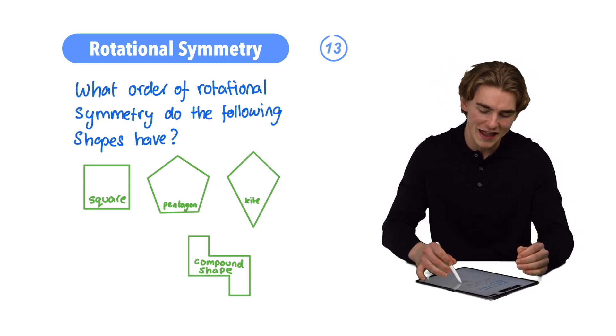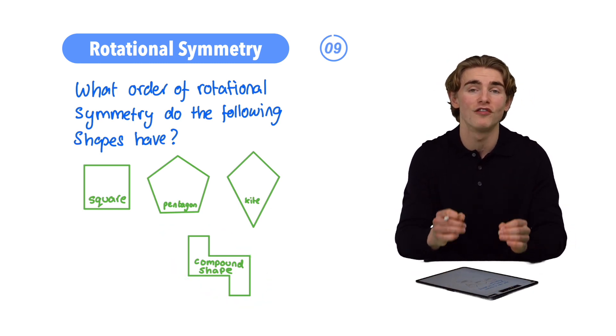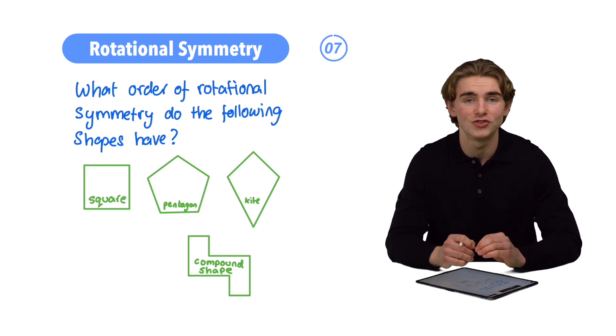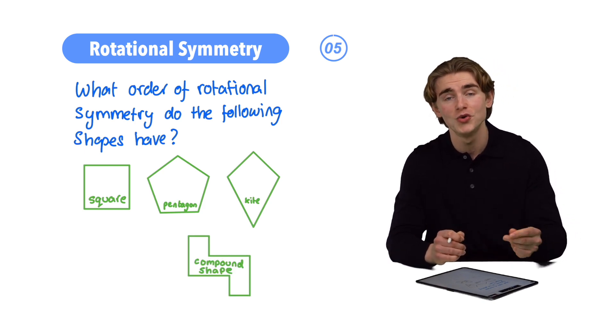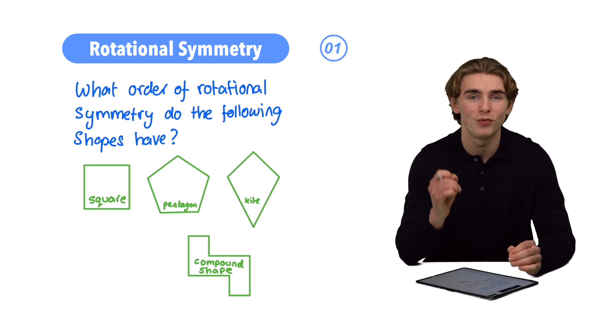Finally, our compound shape down here in the bottom right-hand corner, guys, we would say that that would have rotational symmetry of order two, and that's because there are going to be two rotations, one, two, which look exactly the same when we rotate this around the center point.